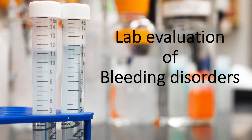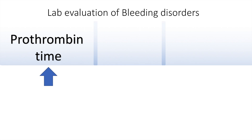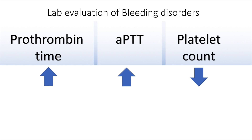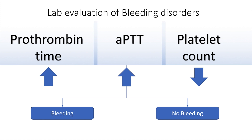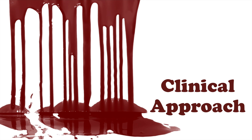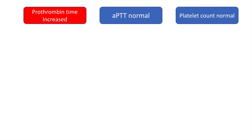We now move on to the lab evaluation of bleeding disorders. Lab evaluation is done under three main headings: the prothrombin time, which will be elevated; the activated partial thromboplastin time, which will also be elevated; and the platelet count, which may be reduced. These parameters, along with whether or not the patient is bleeding, form the basis of the clinical approach to bleeding disorders.